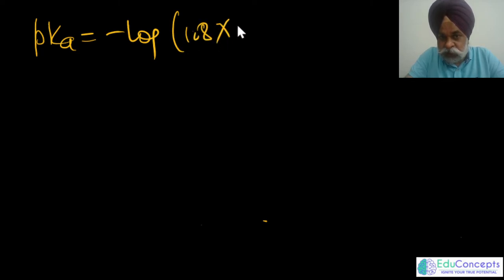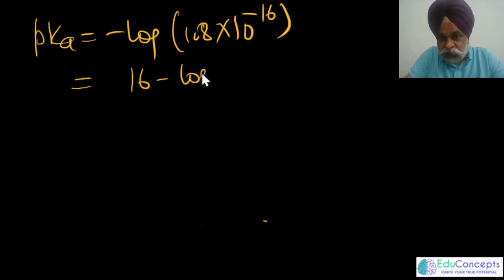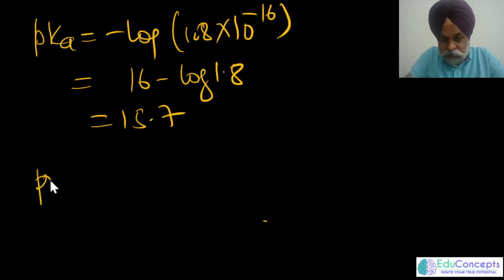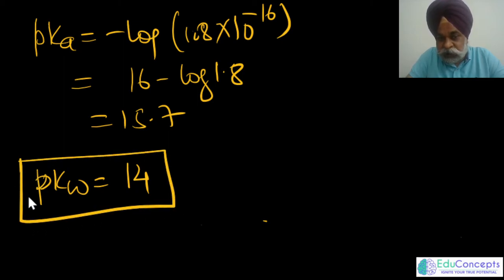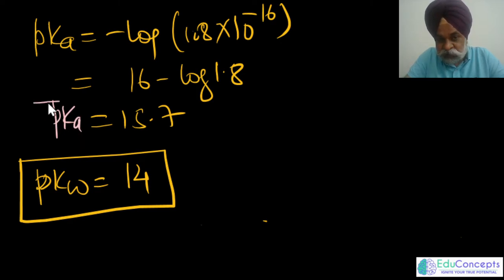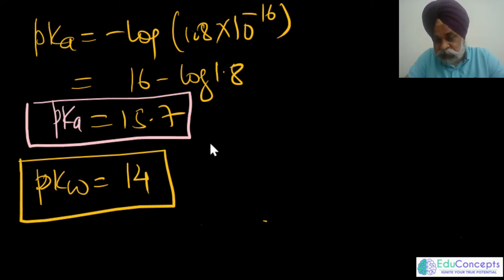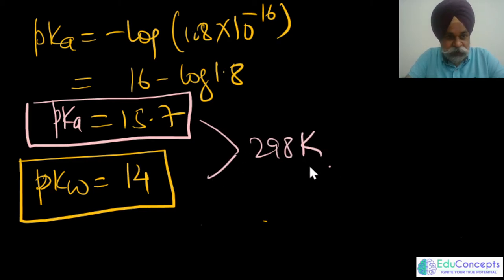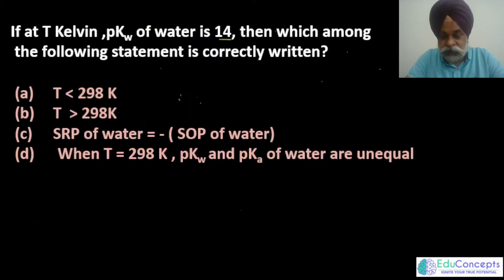So pKa = −log(1.8 × 10⁻¹⁶) = 16 − log(1.8) ≈ 15.7. Two terms have now been established: pKw = 14 and pKa of water = 15.7, both specified at 298 K. Let me now address the second question first.